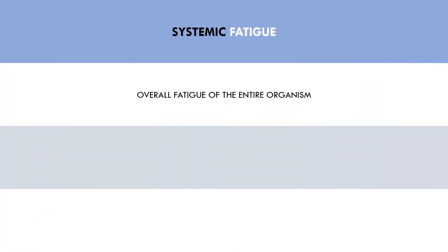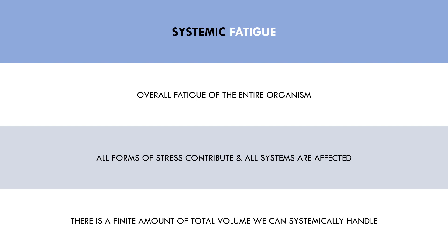The second potential limiting factor is systemic fatigue. Systemic fatigue is not a well-defined phenomenon, but it can be generally described as fatigue of the entire organism, affecting all bodily systems in a non-specific way. All forms of stress contribute to systemic fatigue, but training volume plays a major role. There is a finite amount of stress each individual can handle per week before systemic capacity is breached, which may manifest as increased risk of illness, increased lethargy, poor sleep, and decreased lifting performance. Simply put, we only have a limited amount of total volume we can perform each week before breaching our systemic capacity.